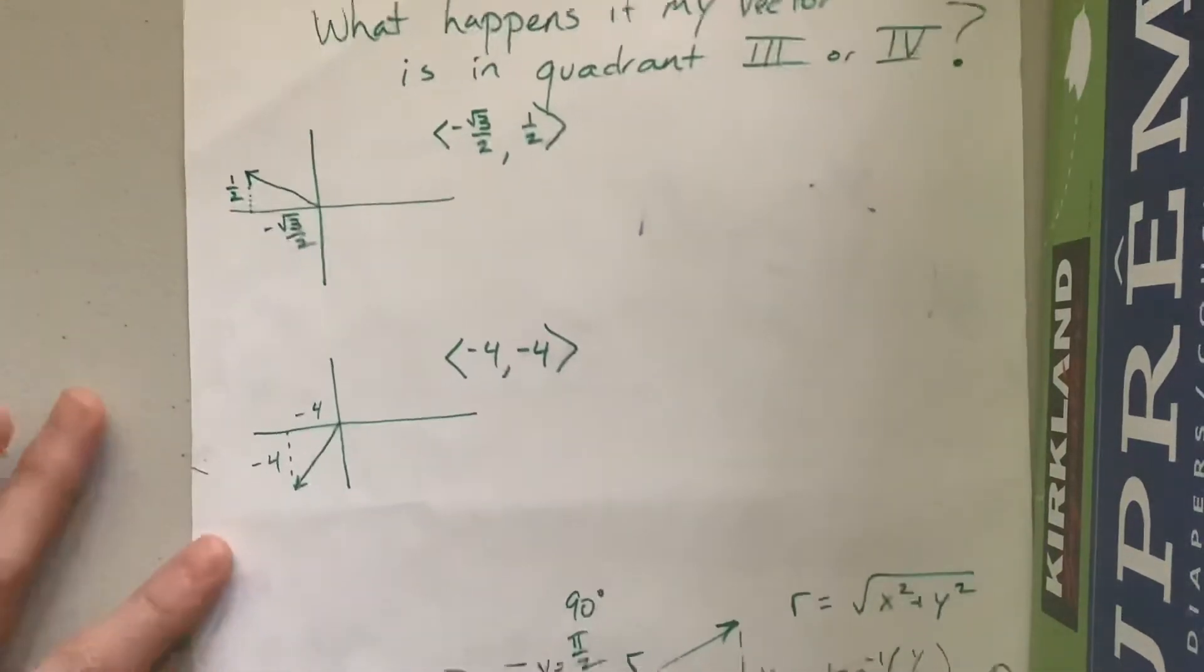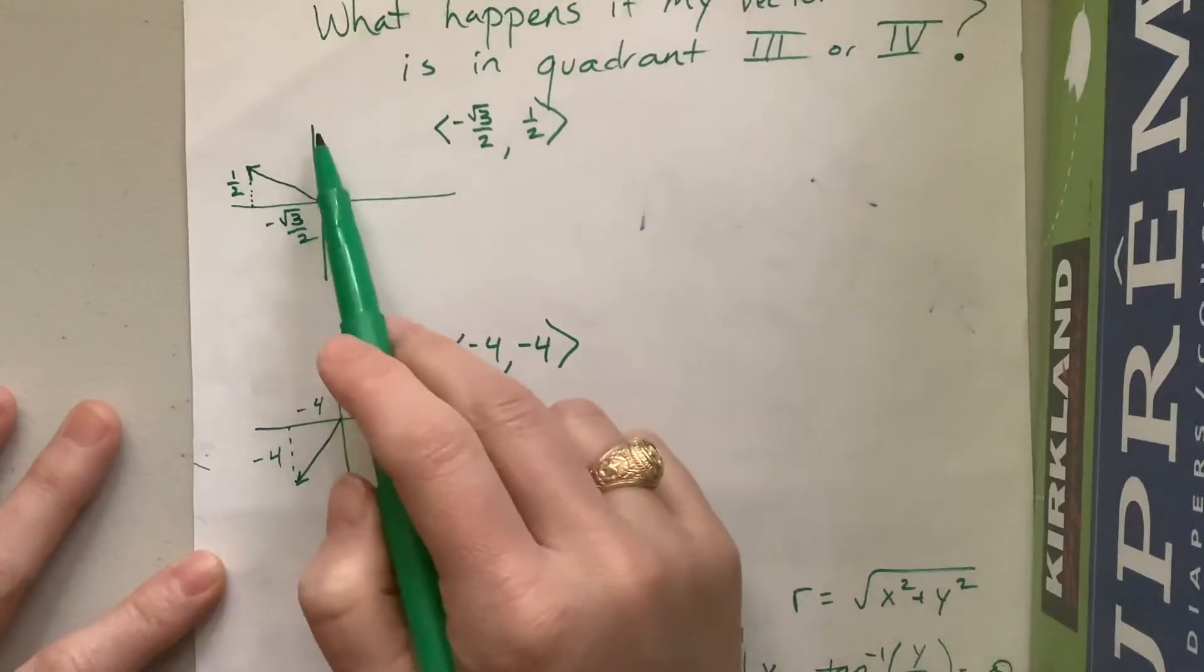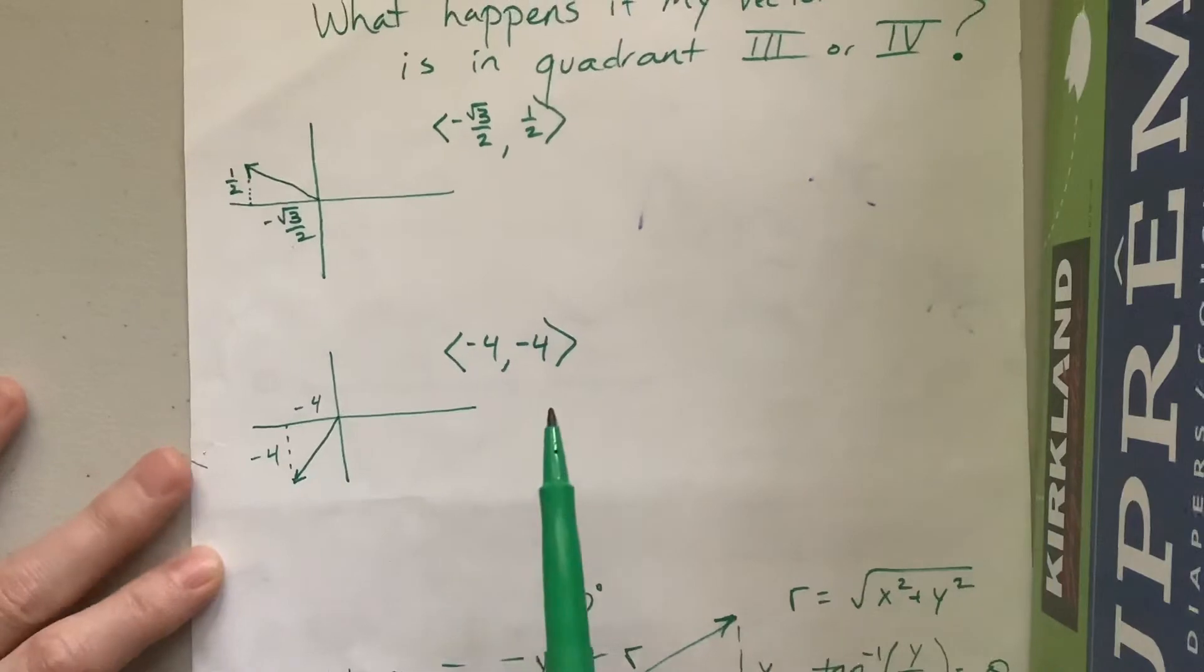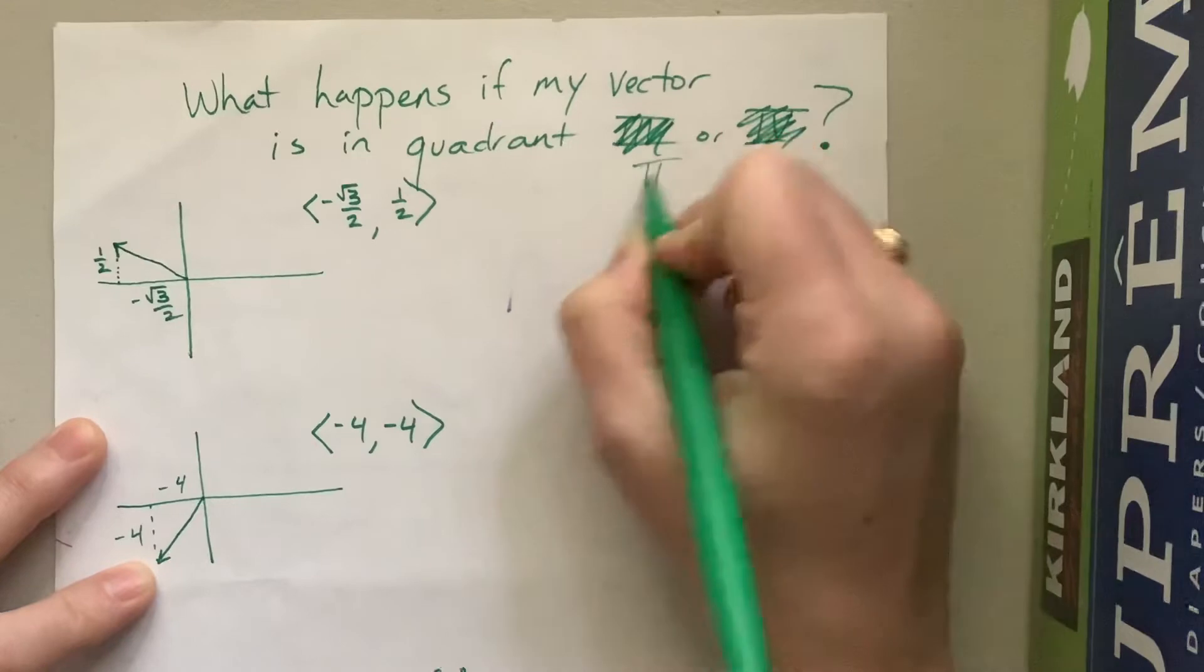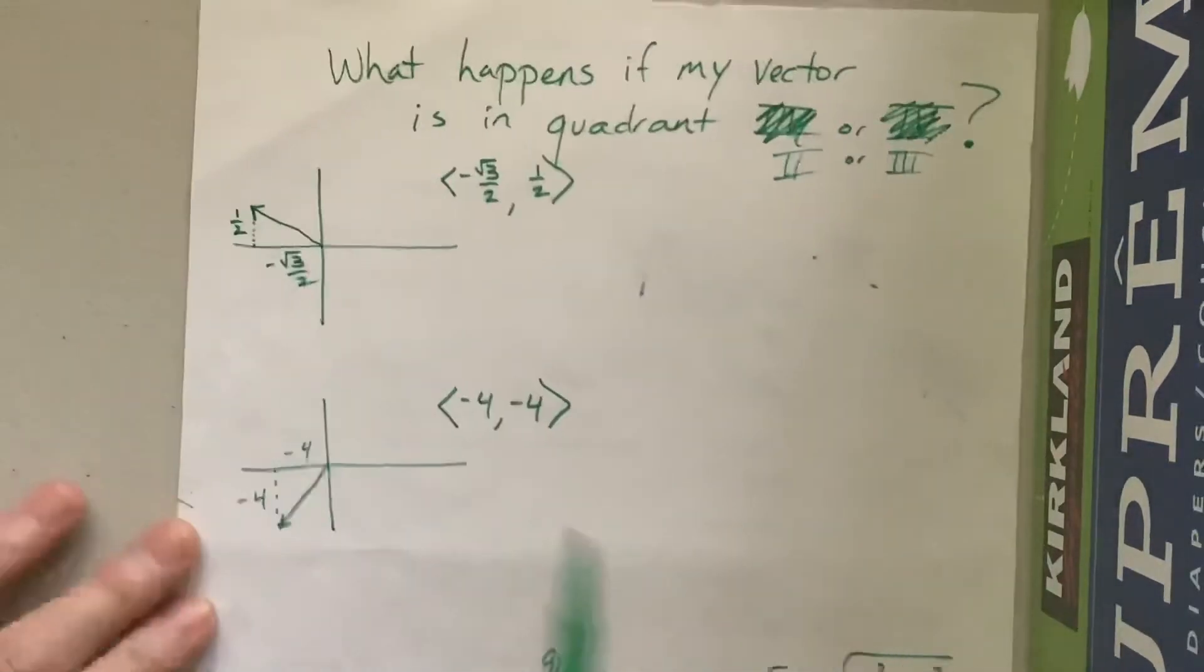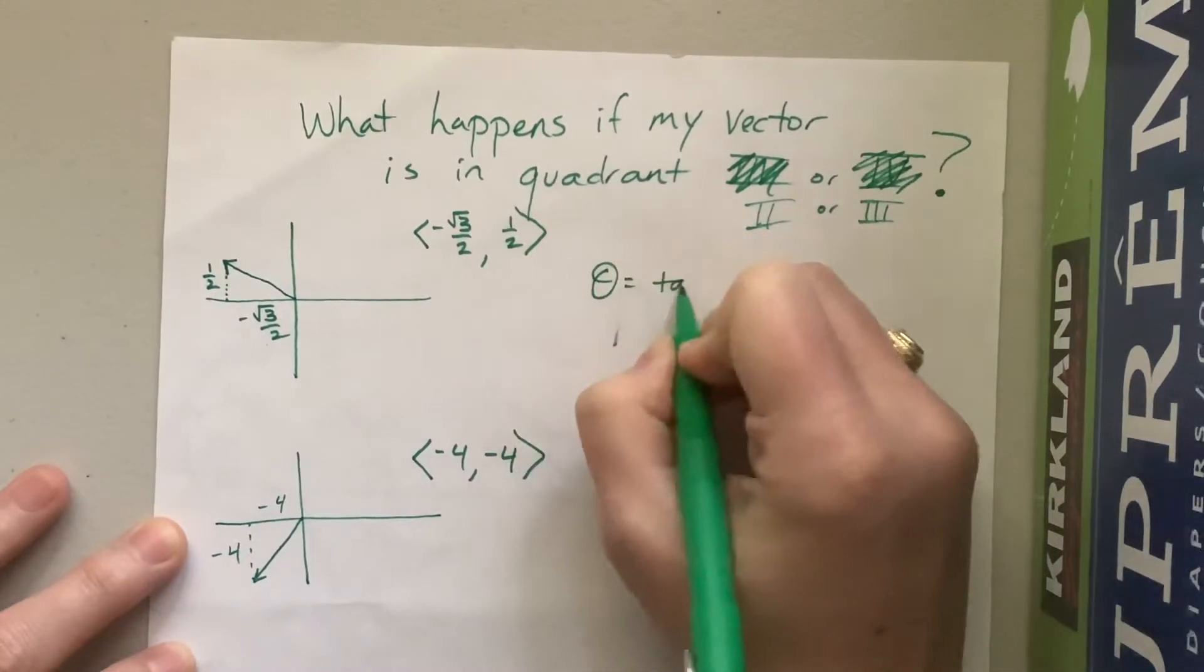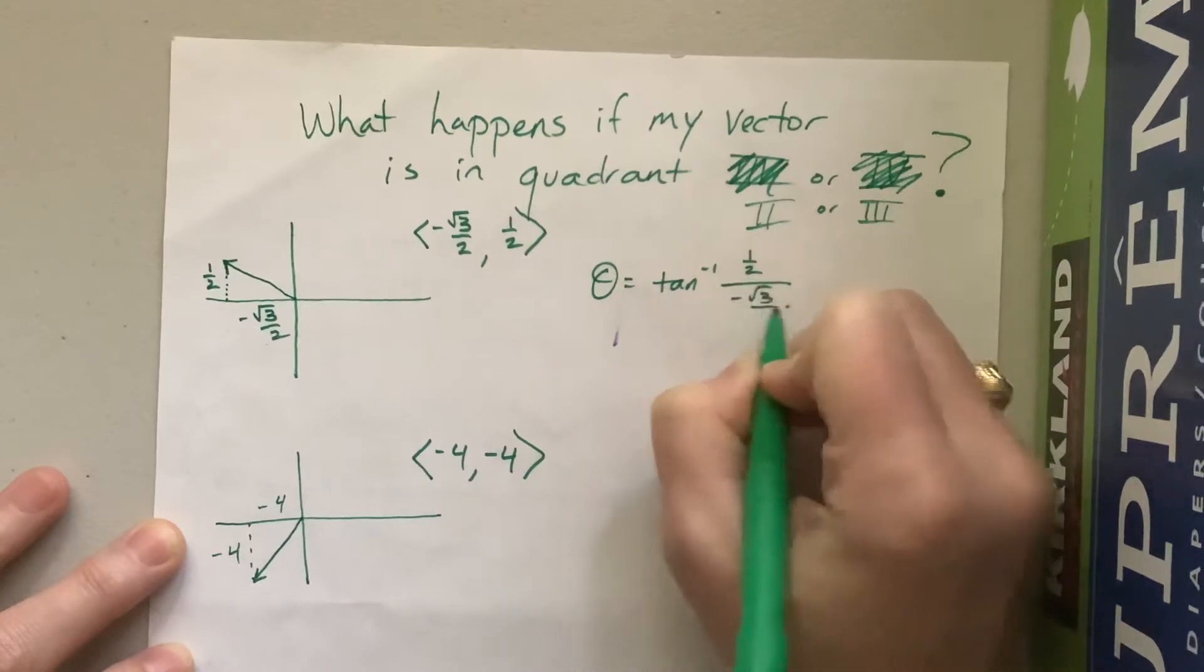Okay, so but over here, look at these two examples. Their answer is not between negative 90 and positive 90. It's over here in quadrant, this one's in quadrant two. Why did I say three or four? Y'all, it's too early in the morning. Two or three. Okay, so what I have here is I can say, okay, well, theta is equal to the inverse tangent of y, one half over x, negative root 3 over 2.